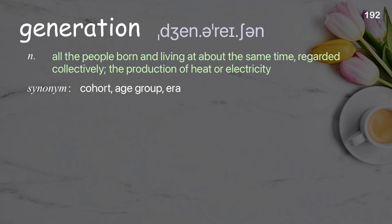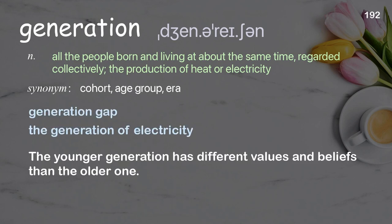Generation: all the people born and living at about the same time, regarded collectively; the production of heat or electricity. Examples: generation gap, the generation of electricity. The younger generation has different values and beliefs than the older one.